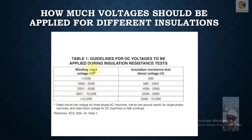The winding rated voltages are given in AC, and the corresponding insulation resistance test voltages applied are in DC. You can select the appropriate value using this table: for example, if the winding rated voltage is less than 1 kV, the insulation test voltage applied is 500 V DC. These are the recommended insulation level testing values.